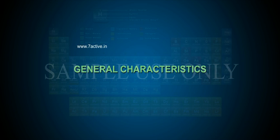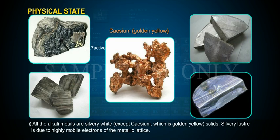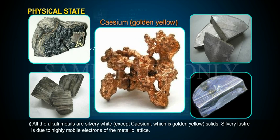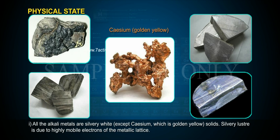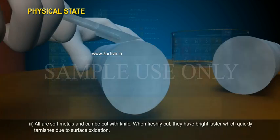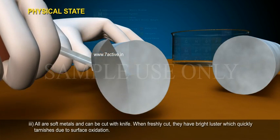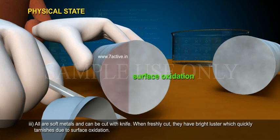General Characteristics – Physical State: 1. All the alkali metals are silvery white, except cesium which is golden yellow solid. Silvery lustre is due to the highly mobile electrons of the metallic lattice. 2. Softness also increases from Li to Cs due to weakening of interatomic attraction. All are soft metals and can be cut with a knife. When freshly cut, they have bright lustre which quickly tarnishes due to surface oxidation.